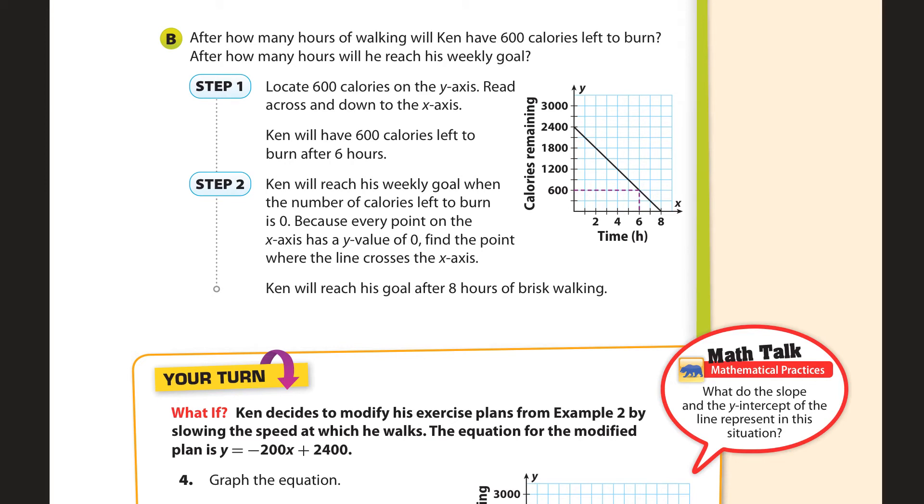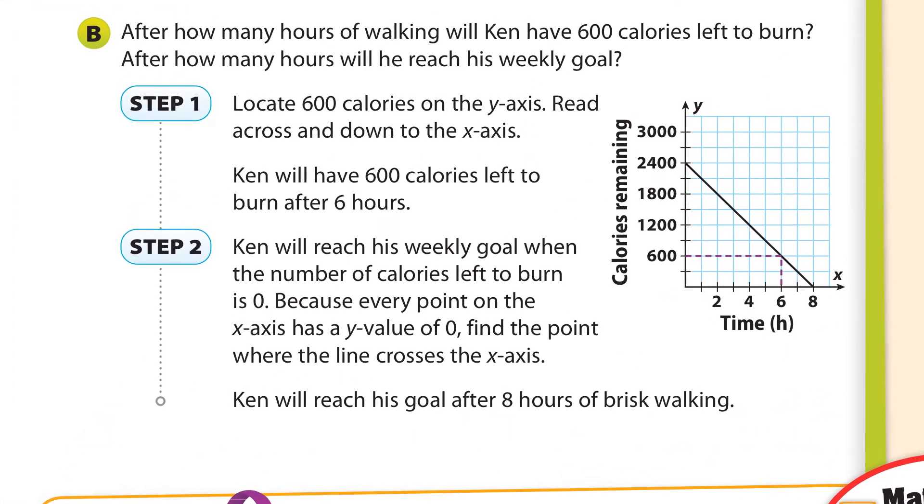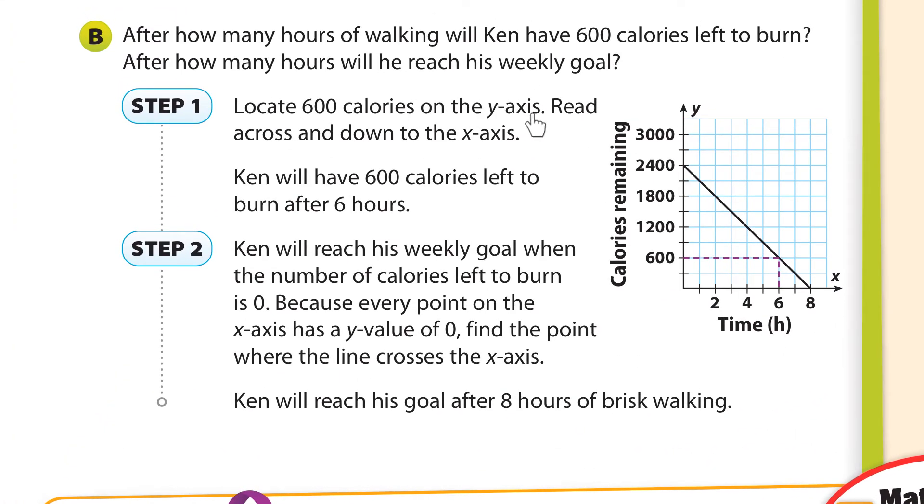And we have part B here. After how many hours of walking will Ken have 600 calories left to burn? And after how many hours will he reach his weekly goal? So we have to locate 600 calories on the y-axis because that's how many are remaining. So 600 is right here. We're going to find 600 on the y-axis. And then we move over here. And that means it's going to be 6 hours right there. So Ken will have 600 calories left to burn after 6 hours. And to reach his weekly goal, when the number of calories left to burn is 0, that's when he's reached his goal. And it looks like that's going to be 8 hours right there.